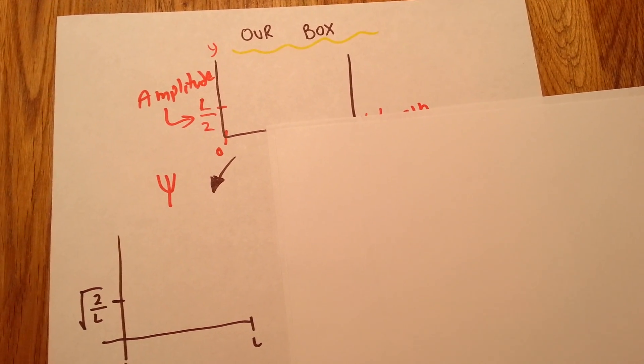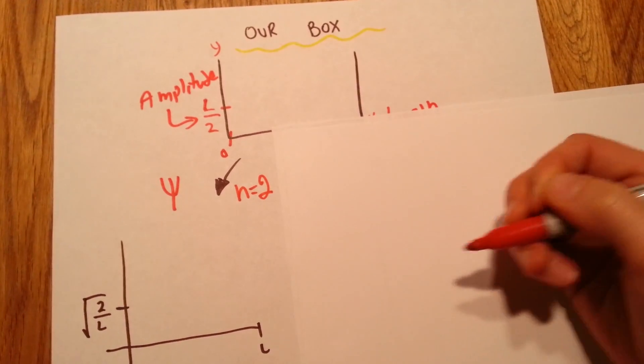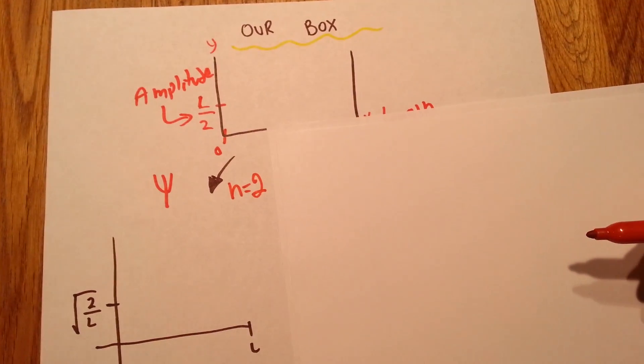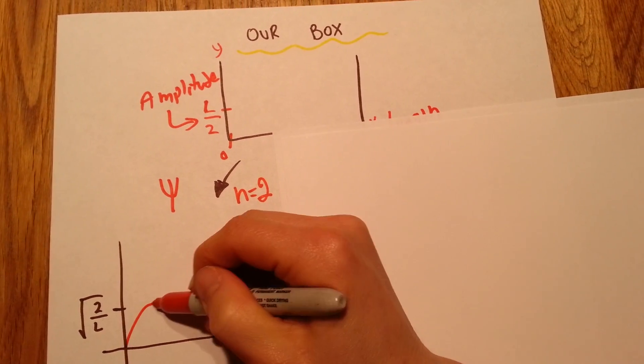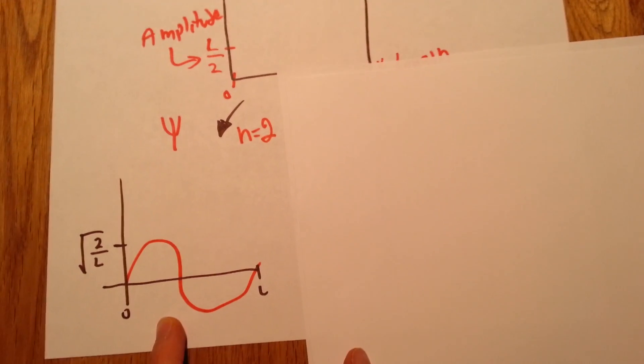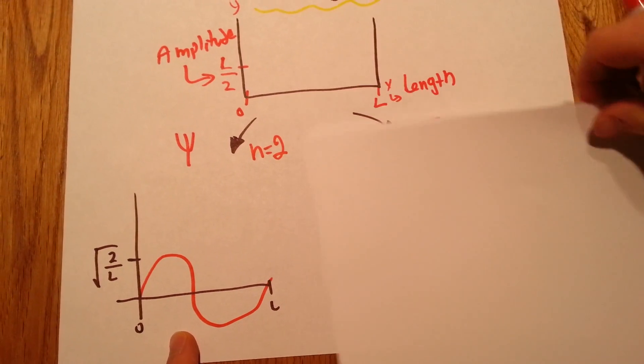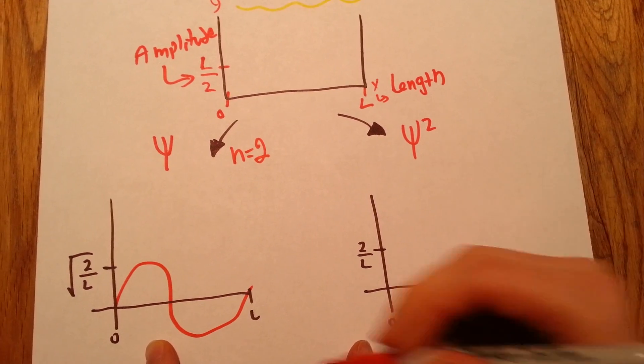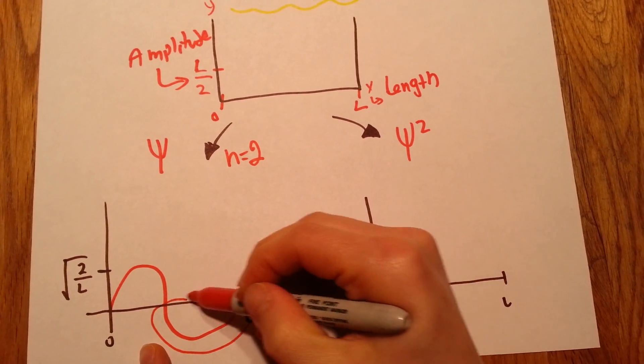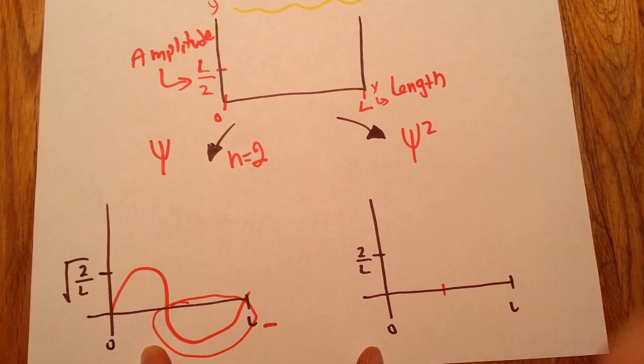If we take an example, n equals 2 for example, the psi wave function graph will look something like this. But when we square it, when we try to find the probability, we're going to find that we can't have this because this is negative. And when you square something, you cannot have anything negative.